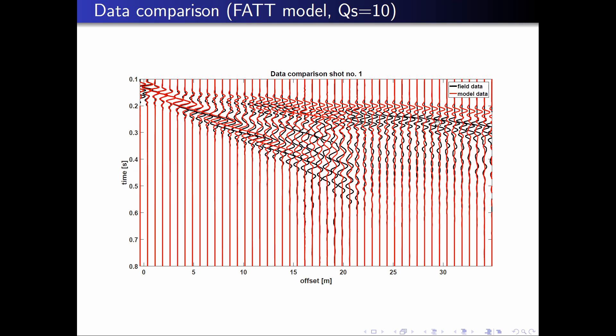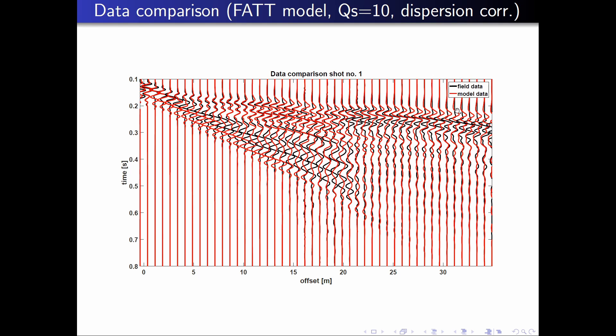The reason is that the first arrival waveform arrives in the modeled data earlier than in the field data, leading to significant cycle skipping. The very low Qs value leads to significant dispersion of the refracted wave and therefore a shift of the first arrival waveform. This Q-related dispersion effect has to be corrected by adjusting the velocity model, after which the modeled first arrival waveform fits the field data in terms of amplitude and phase very well.